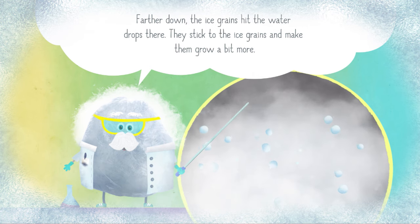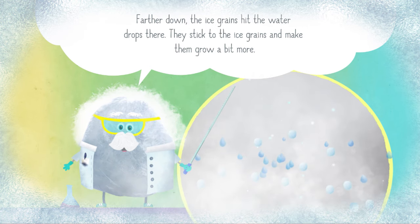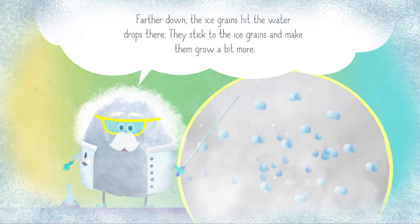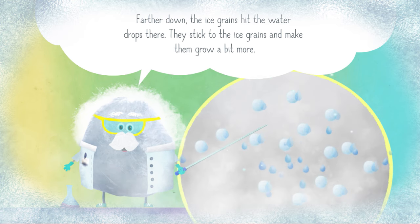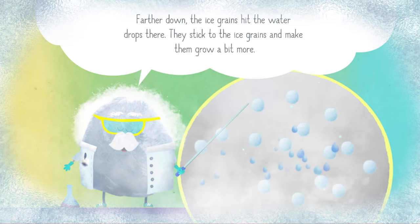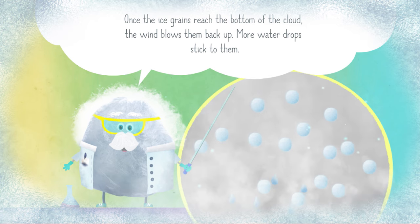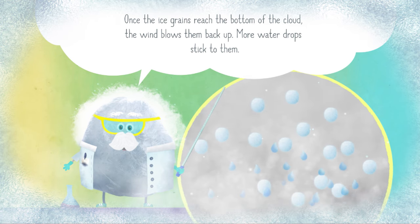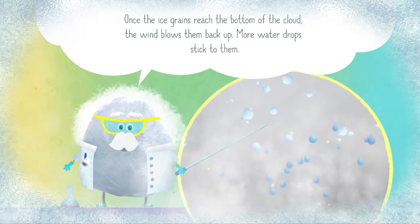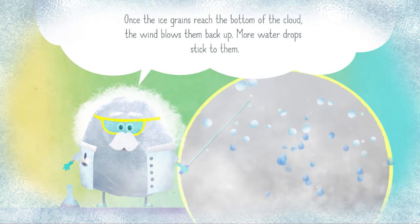Farther down, the ice grains hit the water drops. They stick to the ice grains and make them grow a bit more. Once the ice grains reach the bottom of the cloud, the wind blows them back up and more water drops stick to them.